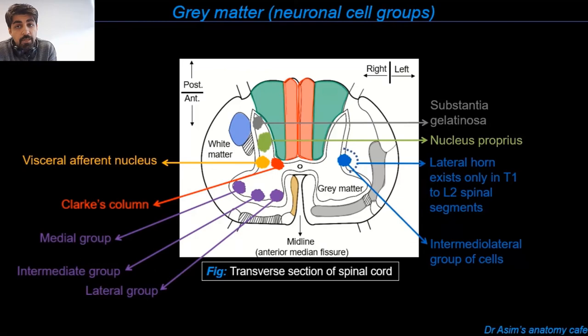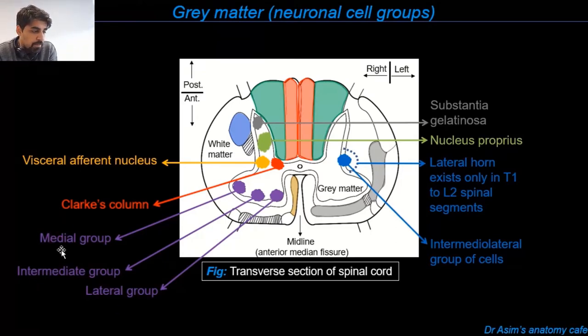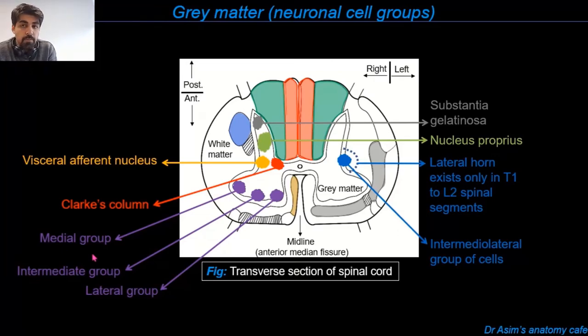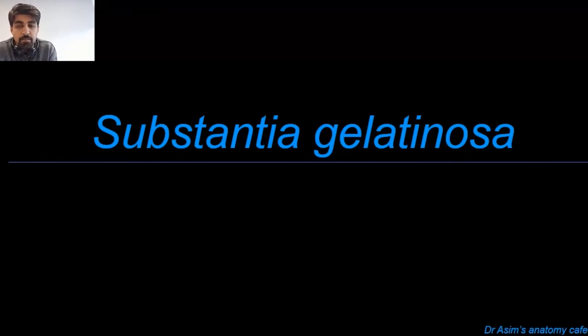Lastly, we have the anterior gray horn of the spinal cord. The nerve cells in the anterior gray horn can be divided into three basic groups: the medial, the intermediate or central group, and the lateral group of neuronal cell bodies, all color coded in purple. Now that we've listed all the major neuronal groups in the anterior, posterior, and lateral gray horns, let's take them up in detail one by one, beginning with the substantia gelatinosa.